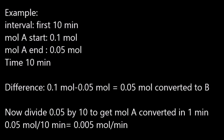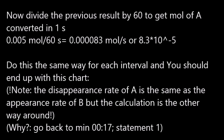Continue by dividing the result by the number of minutes the interval is long, which in this case is 10, to get the disappearance rate per minute. Now convert the average disappearance rate per minute into mole per second by dividing the result by 60.